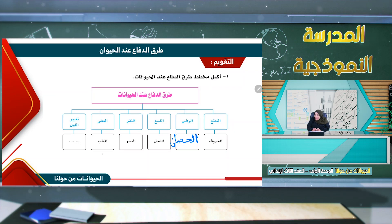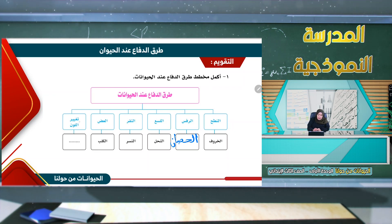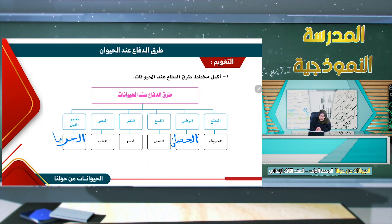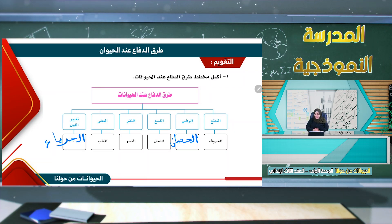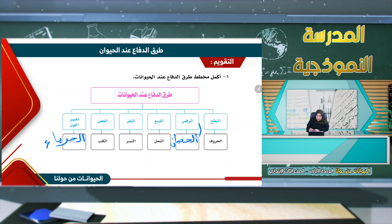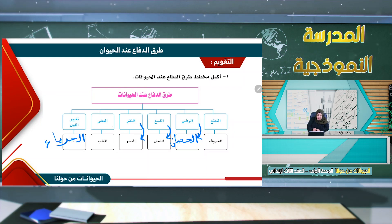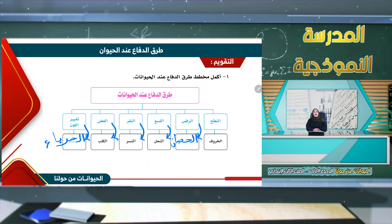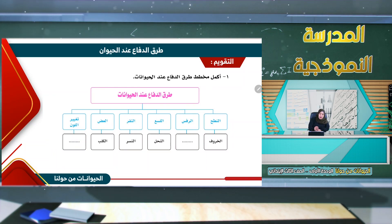العض مثل الكلب، يقوم الكلب بالعض إذا أراد الدفاع عن نفسه. تغيير اللون مثل الحرباء. إذن هناك طرق عديدة للحيوان كي يدافع عن نفسه: النطح، الرفس، اللسع، النقر، العض، وتغيير اللون.